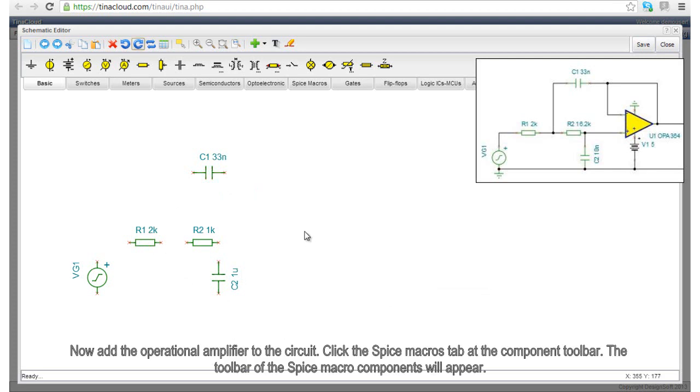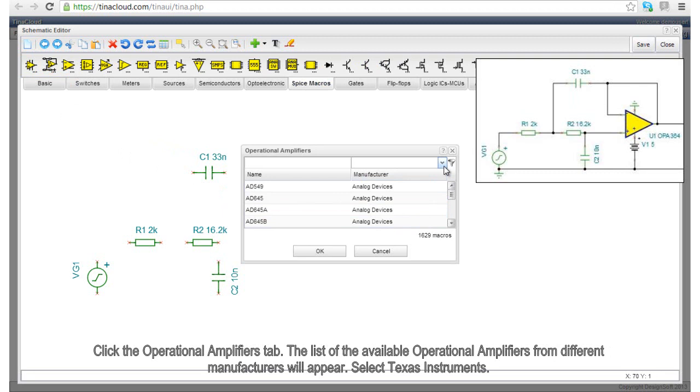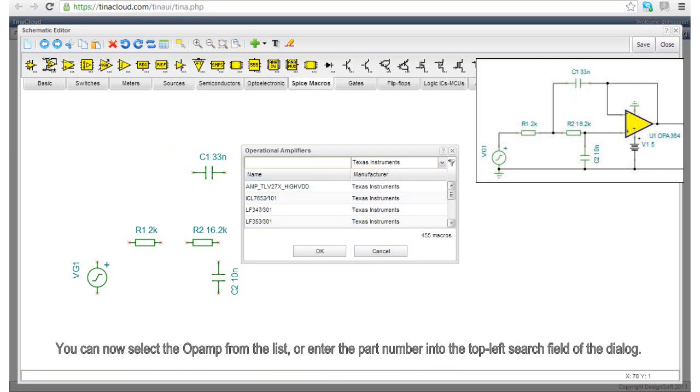Now, add the operational amplifier to the circuit. Click the SPICE macros tab at the component toolbar. The toolbar of the SPICE macro components will appear. Click the operational amplifiers tab. The list of the available operational amplifiers from different manufacturers will appear. Select Texas Instruments. You can now select the op-amp from the list, or enter the part number into the top left search field of the dialog.